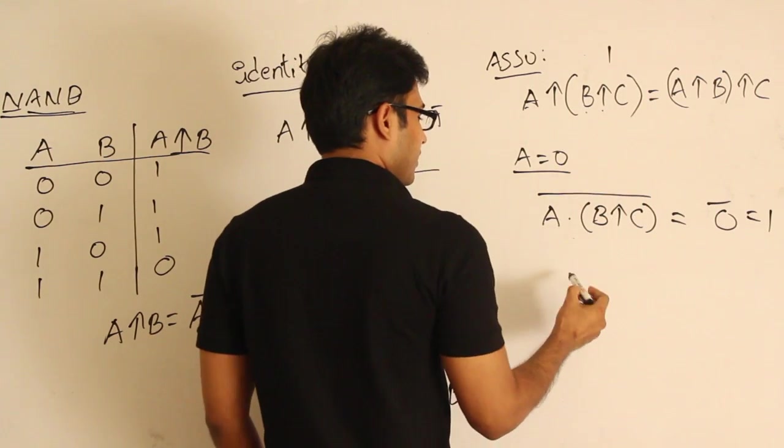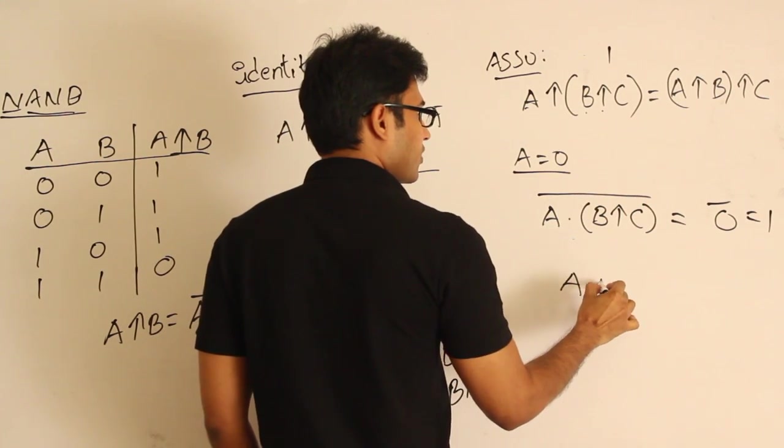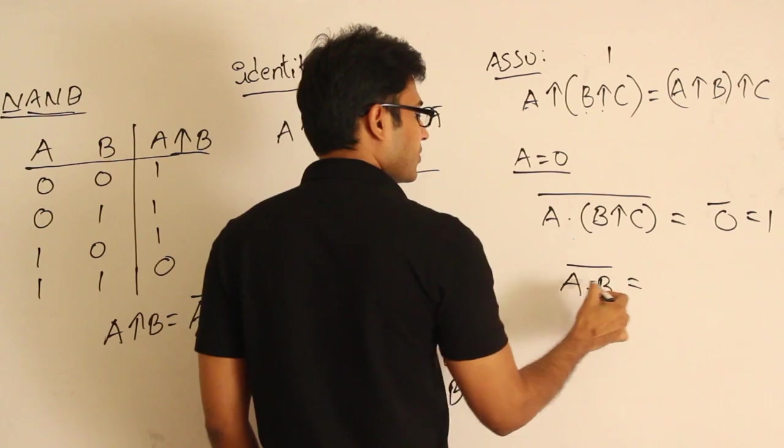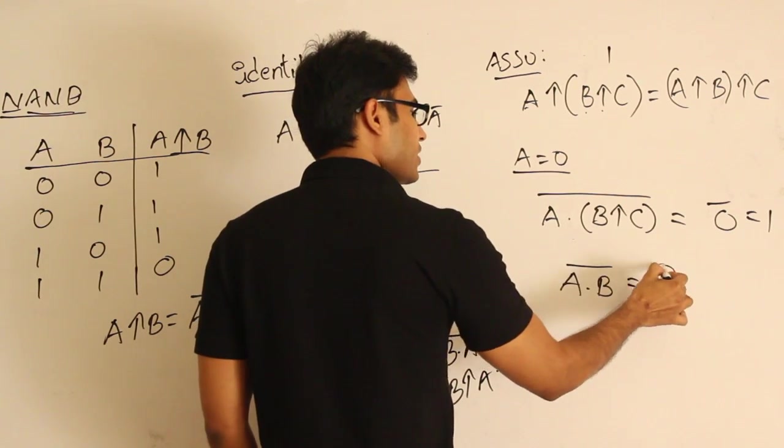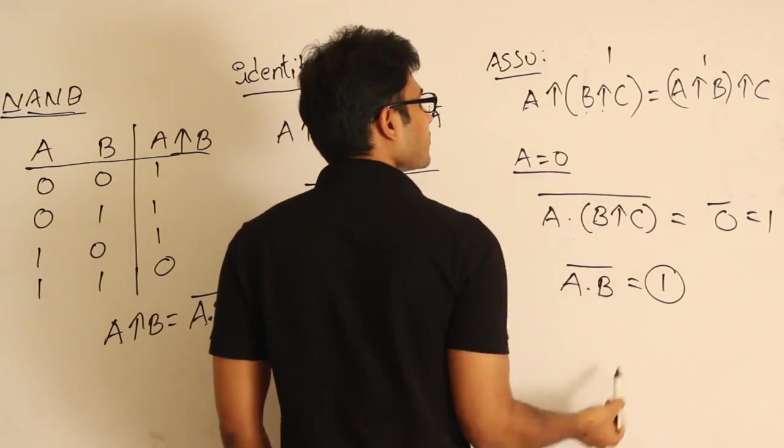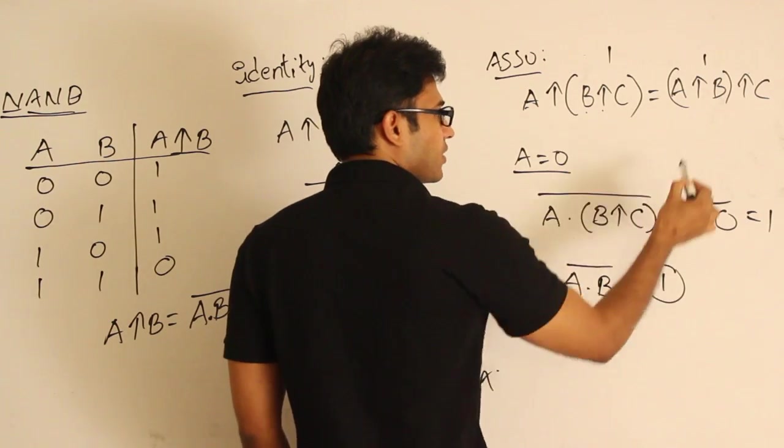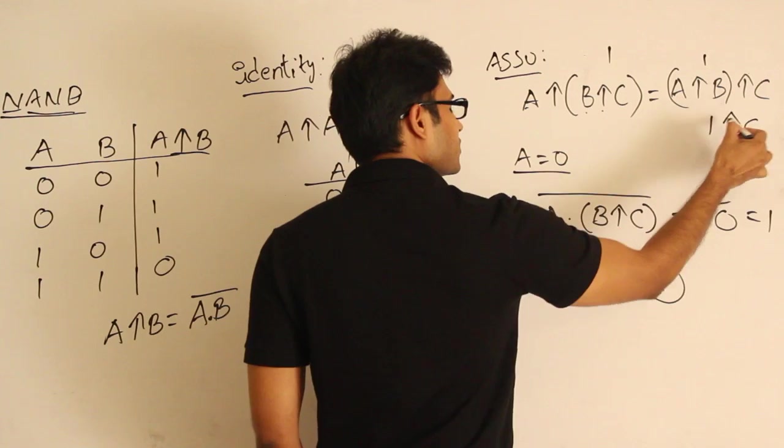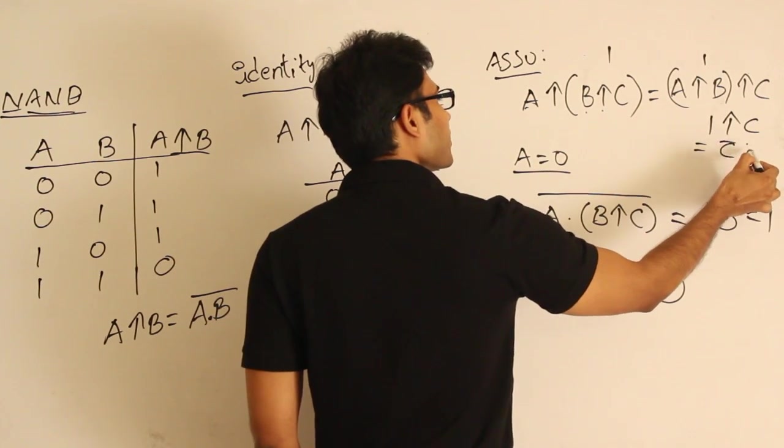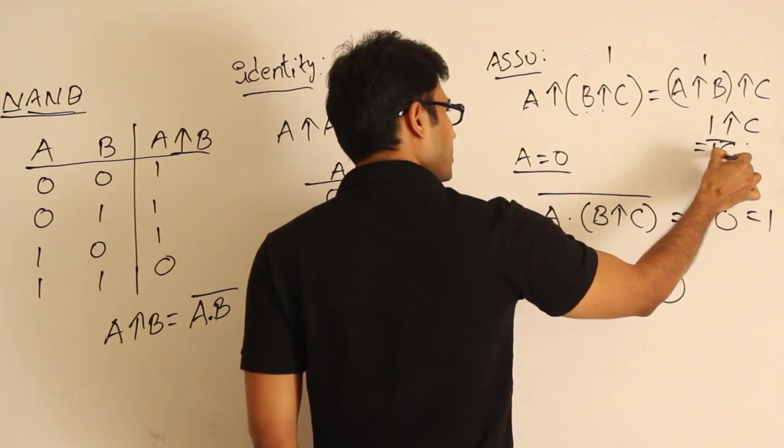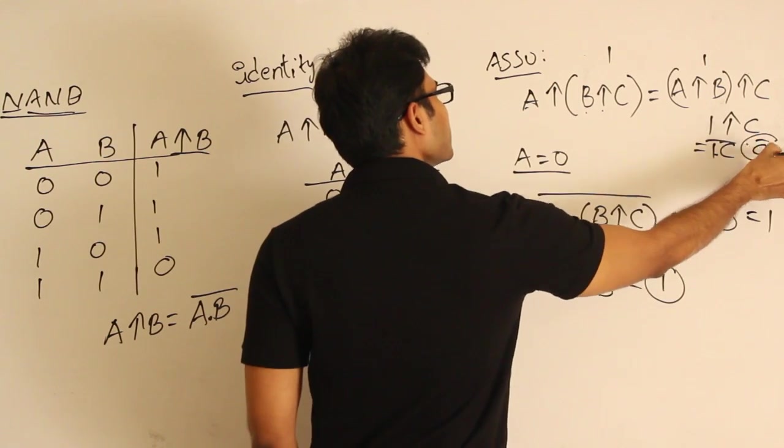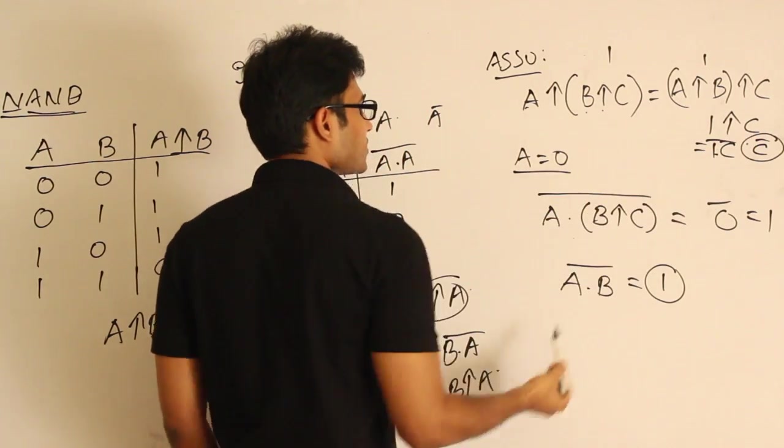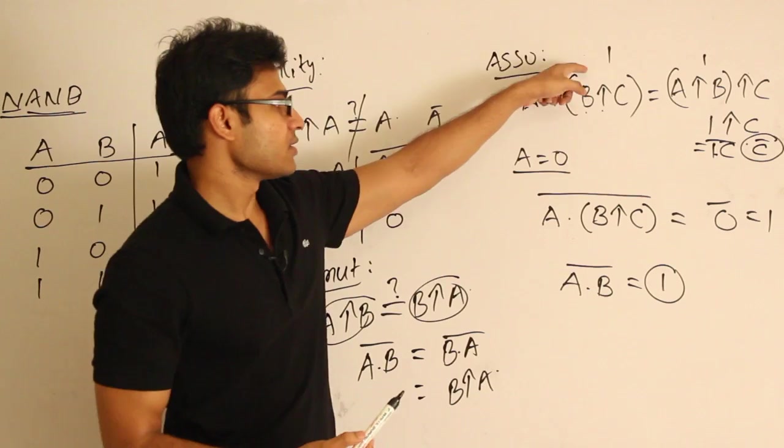This one is nothing but A concatenated with B complement. If I put A=0, I get this entire thing as 1. Now this entire thing is 1. It is 1 NAND with C, that is nothing but C complement — 1 dot C complement, which is C complement. So we got different expressions. Left side I am always getting 1 if A=0...